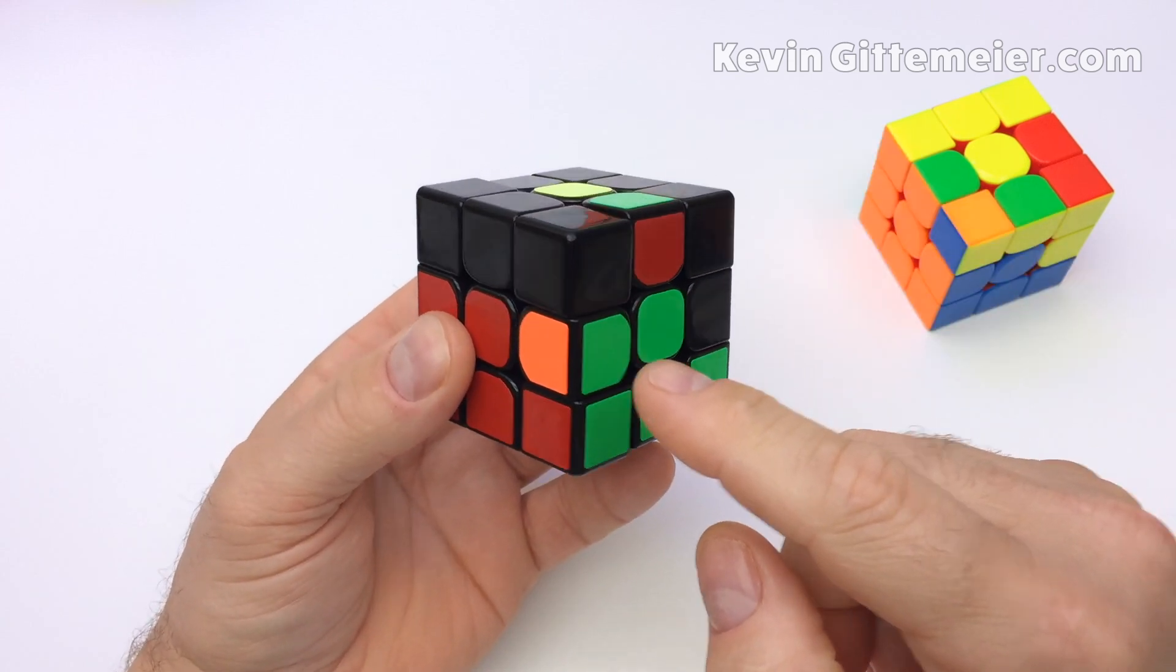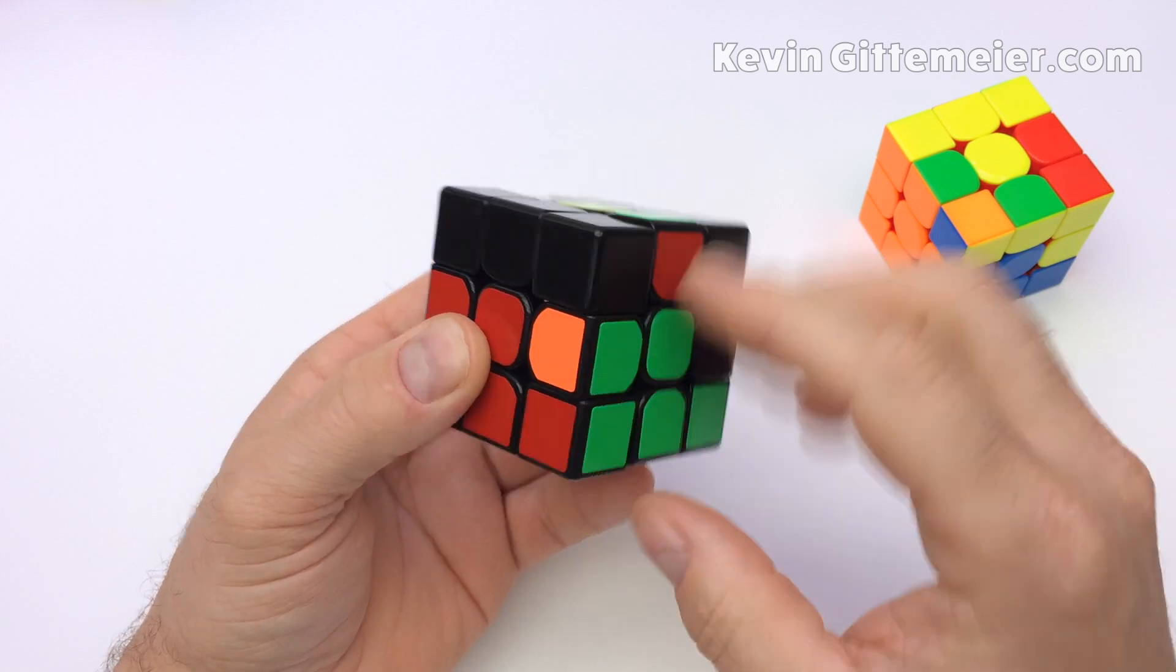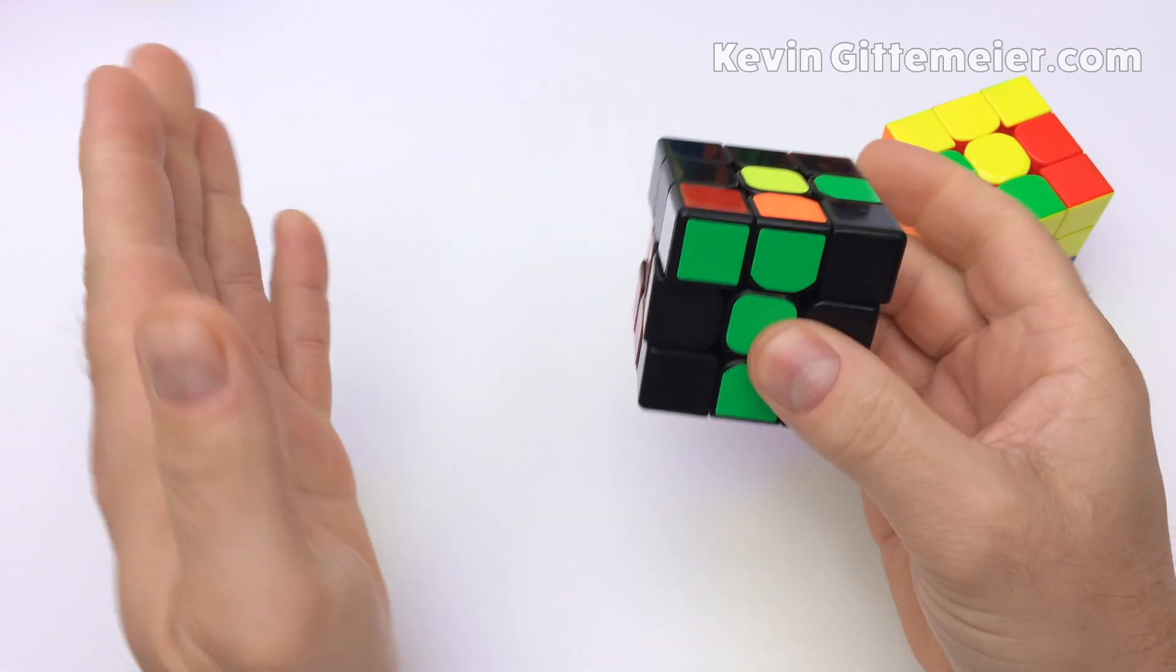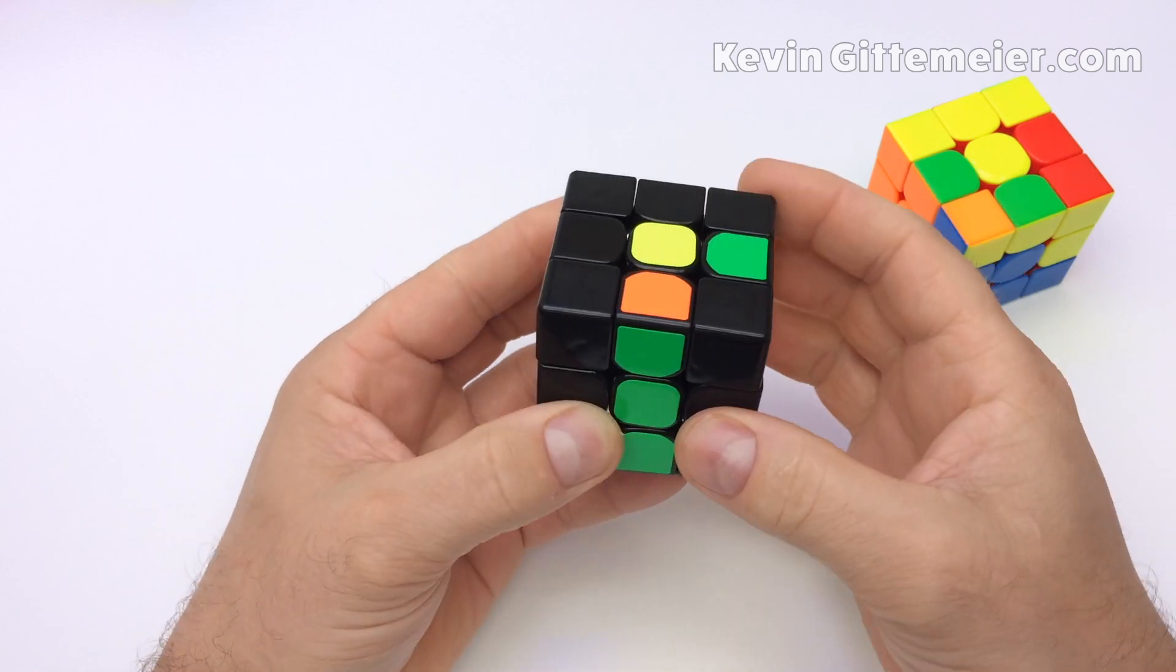If an edge is already in the second layer, but in the wrong location, just kick it out and then reinsert the corner. Now that edge is out, line it up. Orange away from orange.